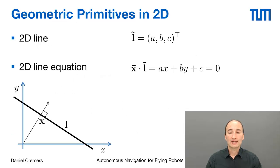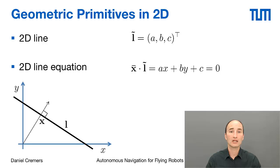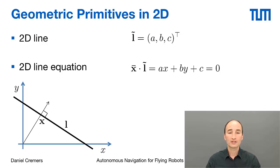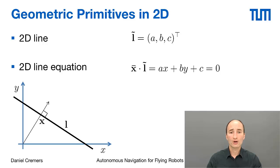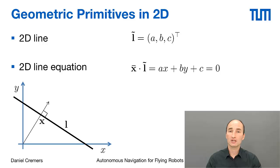We can represent lines by some offset from the origin and some direction of the line. In this class, we will use a homogeneous coordinate vector L-tilde to represent lines. It contains three components A, B, C, and the idea is that any point on the line written in augmented vector x-bar is on the line if and only if it is orthogonal to L-tilde. So the scalar product of x-bar and L-tilde — that is A·x plus B·y plus C — must be 0.